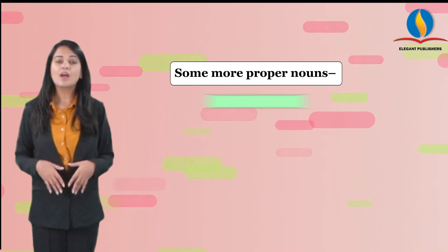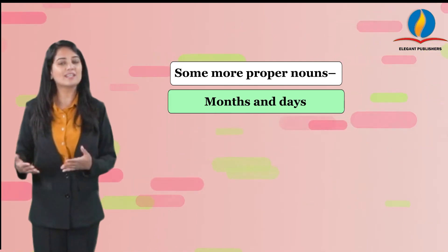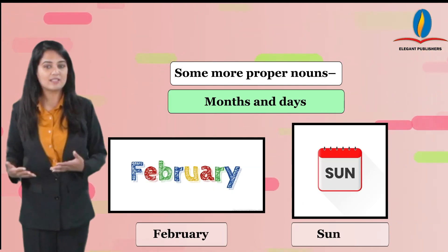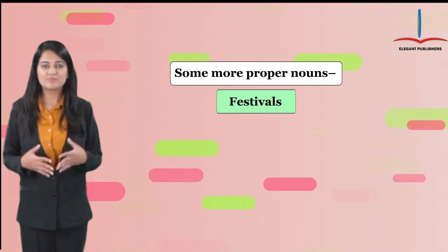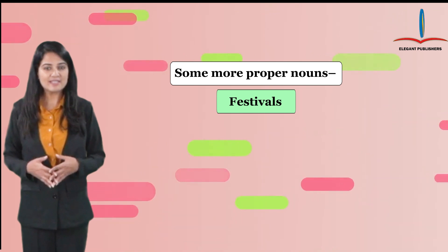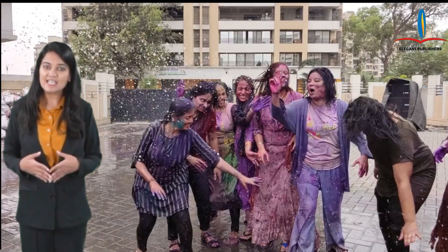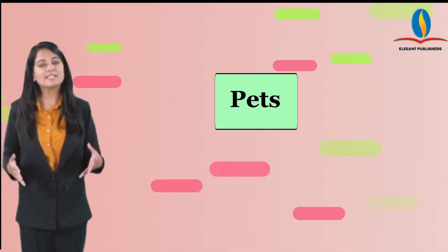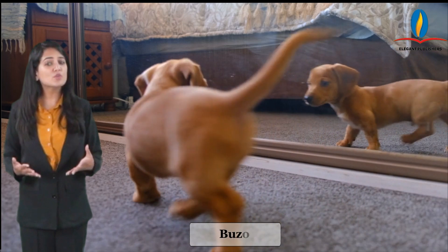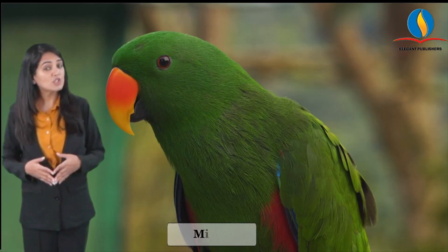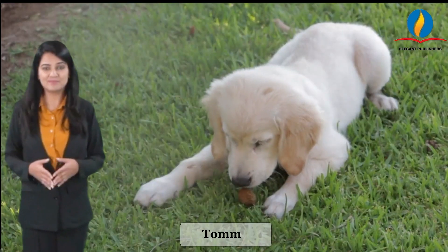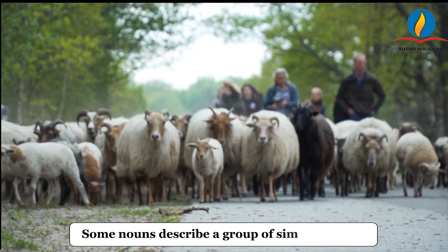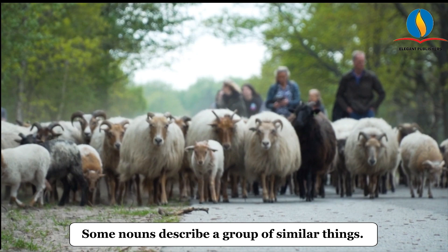More proper nouns — months and days: February, Sunday; festivals: Christmas Eve, Holi; pets: Boozo, Me Too, Tommy. Some nouns describe a group of similar things.